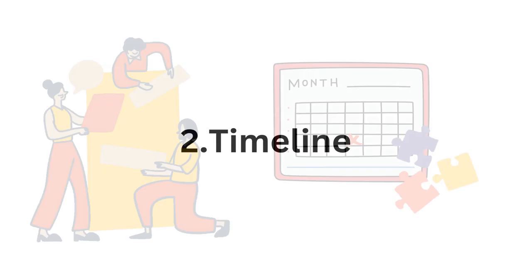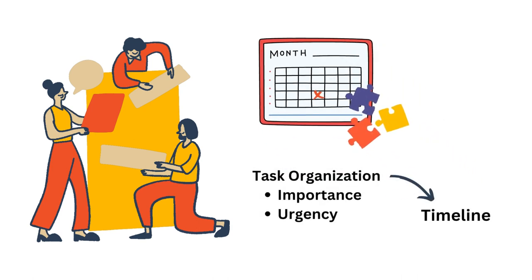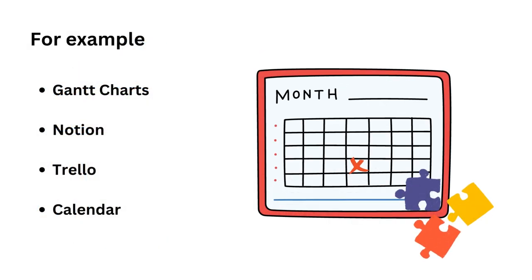Timeline. Another thing to do is break down the project into smaller parts. This makes the overall project less daunting and it can help your group organize tasks by importance or urgency in order to create a comprehensive timeline to make sure the project is completed by its deadline. For example, you can use tools like Gantt charts or project management software like Trello, Notion, or even a shared online calendar to keep track of project deadlines.